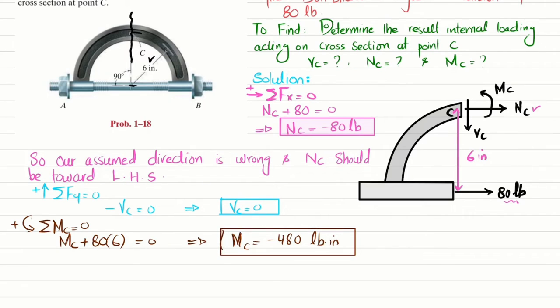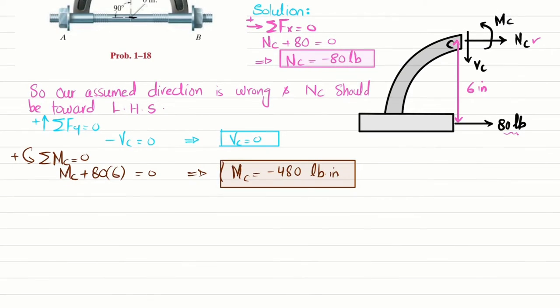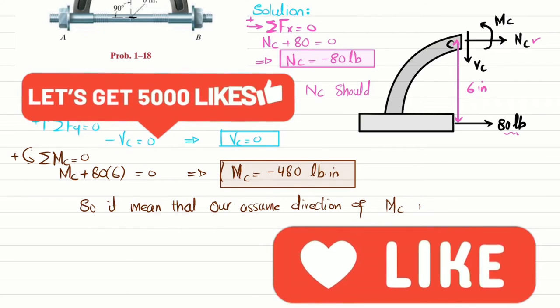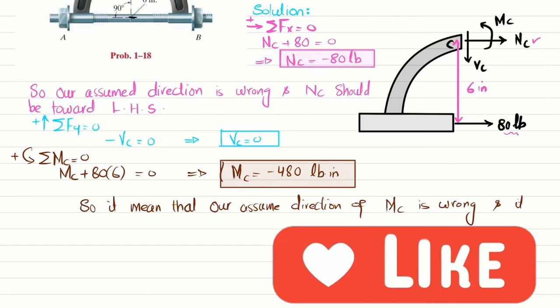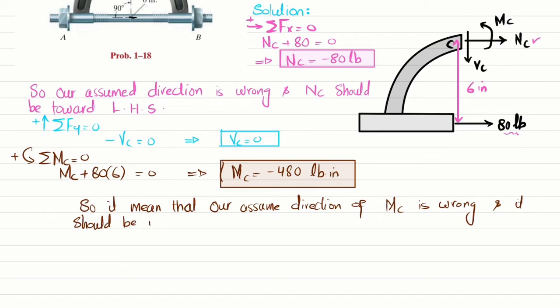We can see that this moment comes out to be negative, so it means our assumed direction of Mc is wrong and it should be in the clockwise direction to keep it in equilibrium.